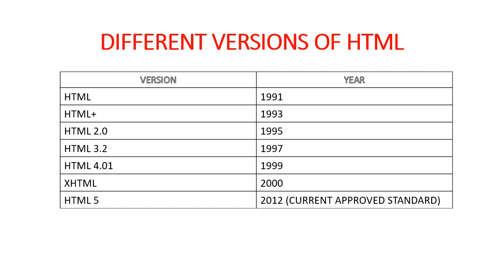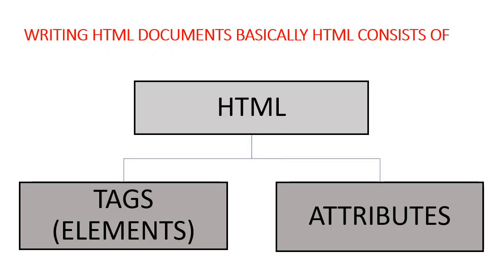Next are the different versions of HTML. It started in 1991 with HTML and the latest approved standard is HTML5, which we will be dealing with. An HTML document basically consists of tags and attributes. Tags are also known as elements and are the basic pieces of code written inside any HTML document. Tags will contain the attributes. So basically two parts of an HTML document are tags and attributes.